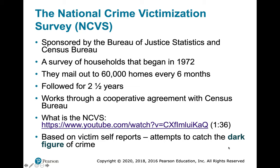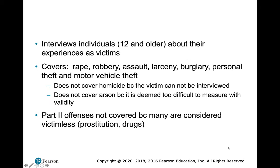To figure out what's happening in the dark figure of crime, we use the National Crime Victimization Survey, or NCVS, which began in 1972 as the National Crime Survey. It surveys 60,000 homes every six months, with each home in the sample for two and a half years. Everyone in the home aged 12 and older is interviewed about their experiences as victims. It covers six of the eight index crimes — it doesn't cover homicide because you can't survey a homicide victim, and arson is too difficult to measure. Many Part Two offenses aren't covered either since many are considered victimless — prostitution, gambling, and drugs.